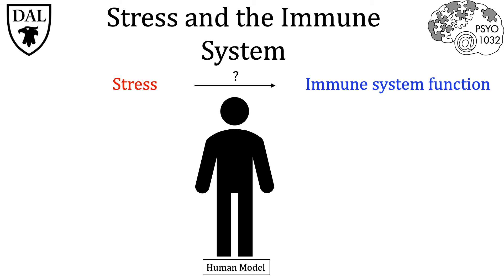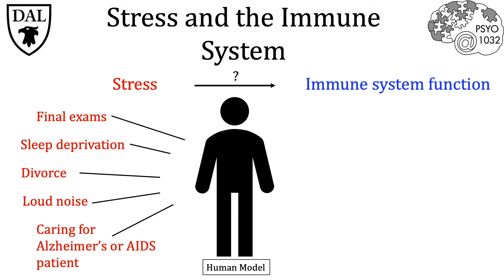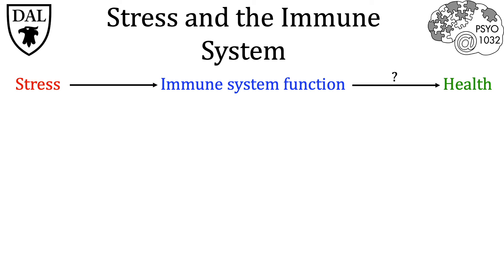Some studies have looked at naturally occurring stressors in human subjects and examined changes in their respective immune system functioning. Naturally occurring stressors like final exams, sleep deprivation, divorce, loud noise, or caring for an Alzheimer's or AIDS patient have all been studied and shown collectively to produce reductions in immune system response or function. It's important to note that these studies infer that stress can cause a reduction in immune system functioning, but they have not told us whether or not this necessarily affects the actual health of the individual.